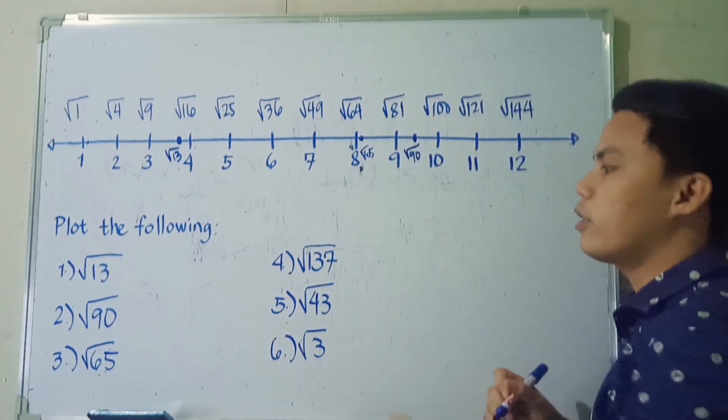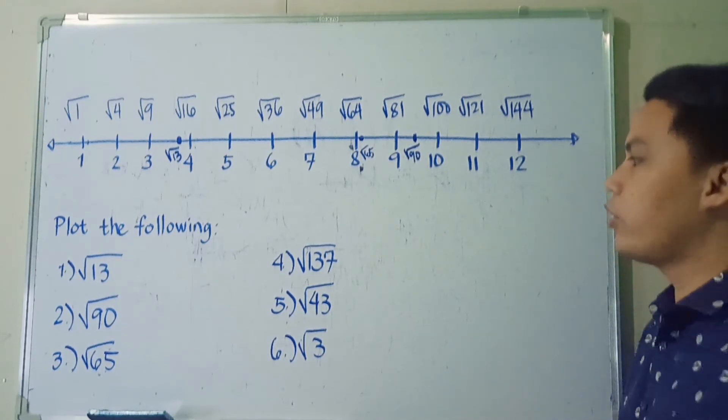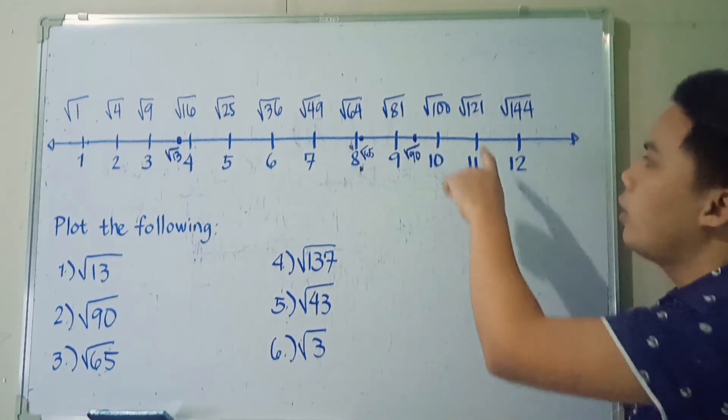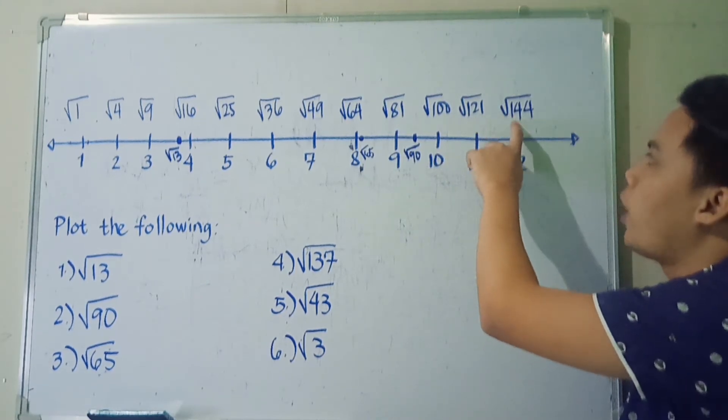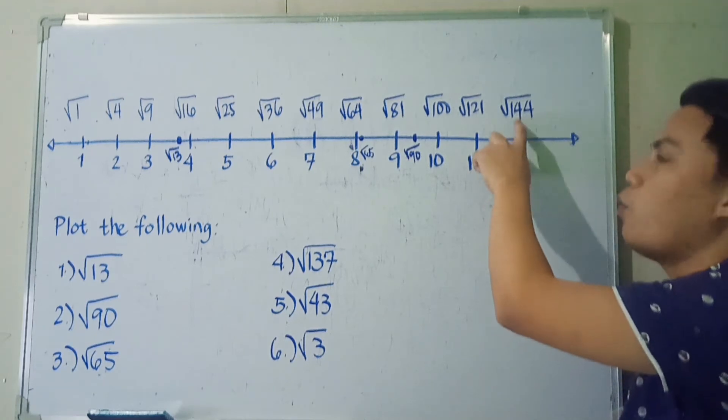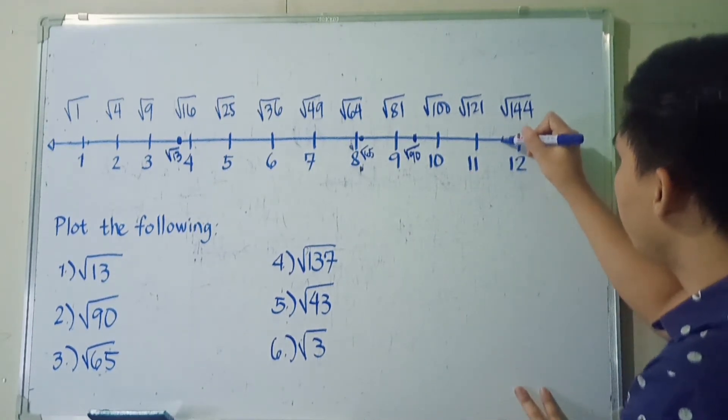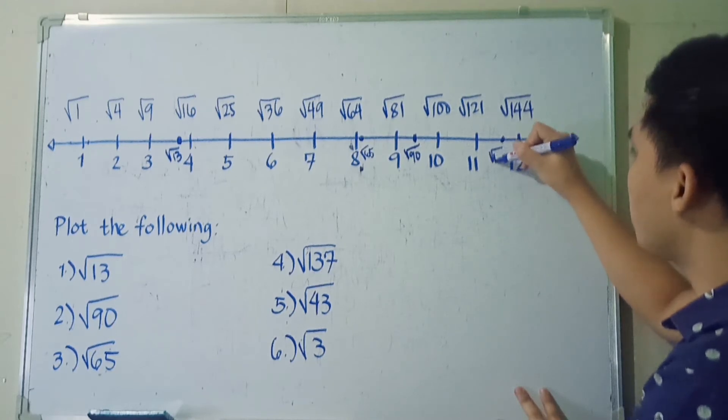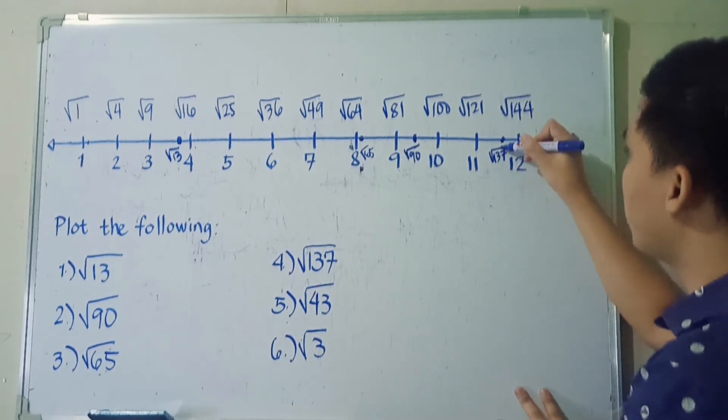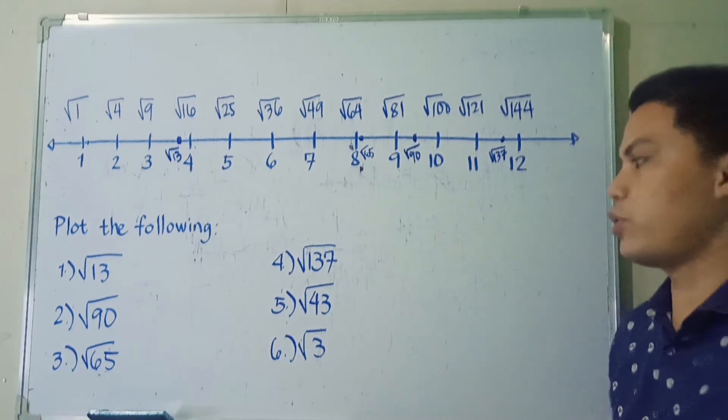Next, we have square root of 137. 137 is between 121 and 144. So where is it closer? It's closer to 144. So we'll just place it here. So this is how simple it is to plot irrational numbers. We're just focused on square roots.